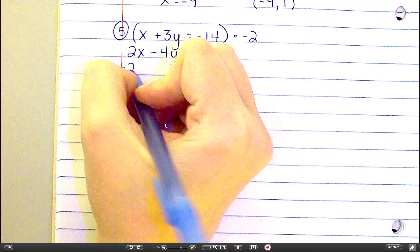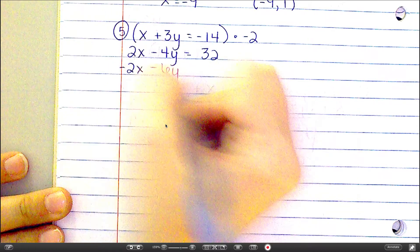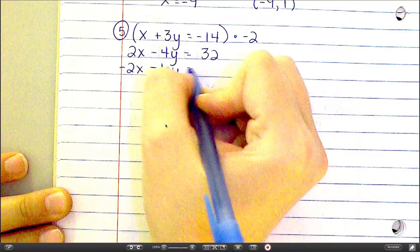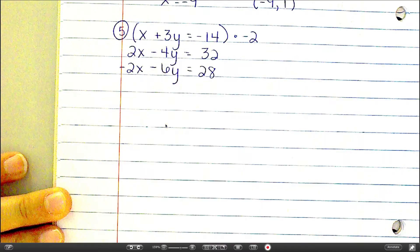That's going to give me negative 2x, negative 2 times 3y is negative 6y, and negative 2 times negative 14 is positive 28. Watch all your signs there.